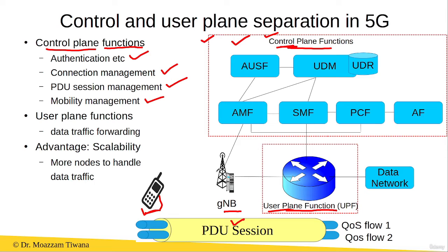Mobility management is also handled by the control plane functions. For example, if this user equipment is in a call and is connected to one gNB, but then moves away from the coverage area of that gNB and enters the coverage area of another gNB, then the handover of this user equipment from one gNB to the other is handled by the control plane functions.